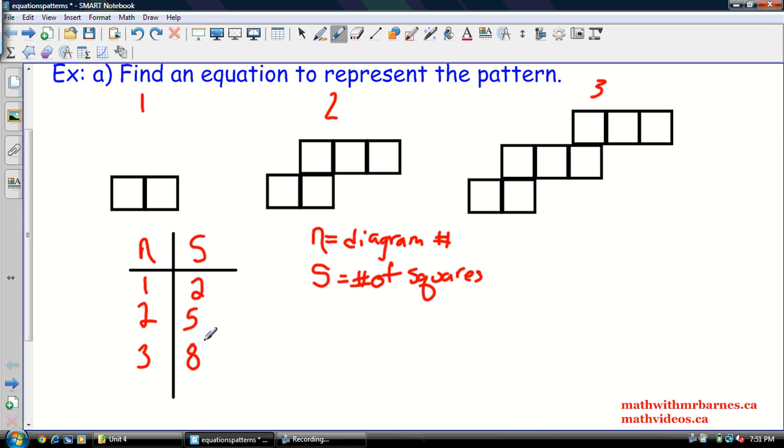So from our table of values, you sort of see the pattern that's going on. So as n increases by 1, as this goes up by 1, this thing, s, the number of squares, increases by 3. So that helps us with our equation. So this is what we're going to do. We're going to start our equation using that knowledge.